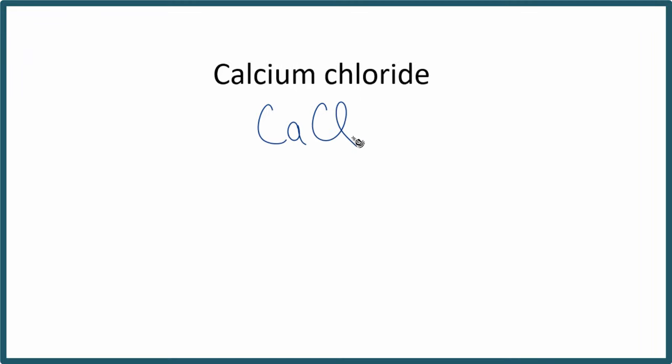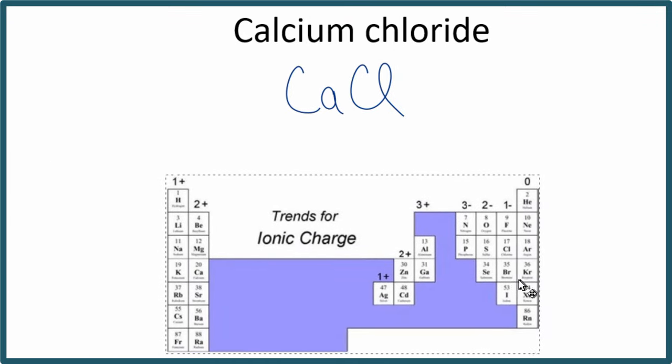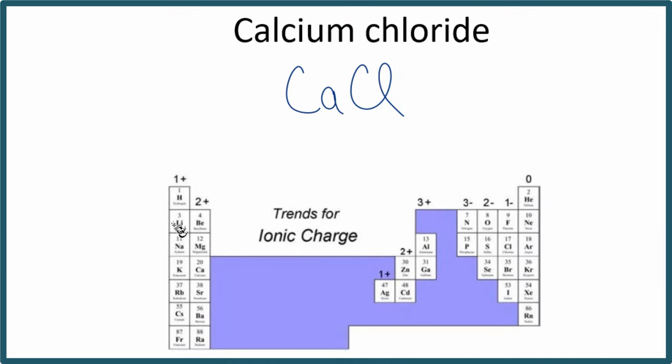So we have CaCl, but because this is an ionic compound, we have to take the charges into account. So if we look at the periodic table, this one's set up to show us the charges, we can see calcium right here is in group 2, so it has a 2-plus ionic charge.